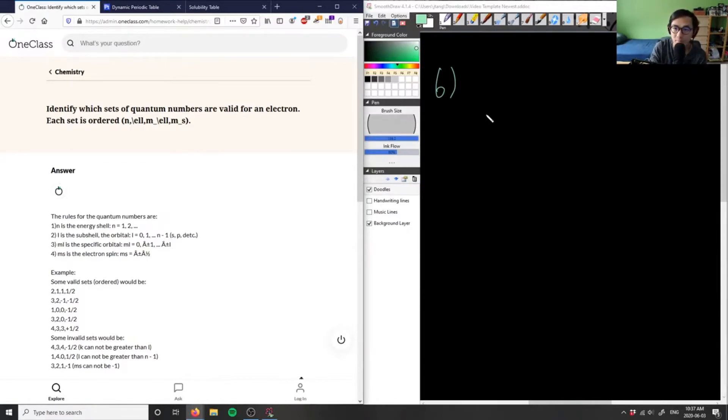Maybe I'll just describe what quantum numbers are. Maybe that's a little bit easier for us to figure out here. So we have n, we have l, m subscript l, and we have m subscript s.